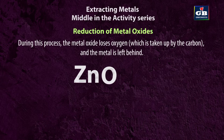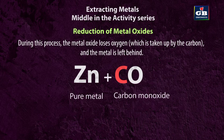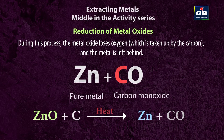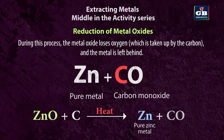For example, when zinc oxide is heated with carbon, carbon acts as the reducing agent. The reaction can be represented as: ZnO + C → Zn + CO. When zinc oxide is heated with carbon, the carbon combines with the oxygen from zinc oxide to form carbon monoxide. The zinc oxide is reduced and converted into pure zinc metal. This reduction can also be done through displacement reactions.